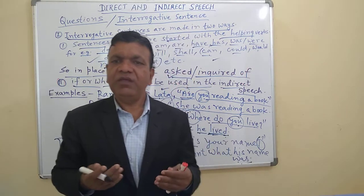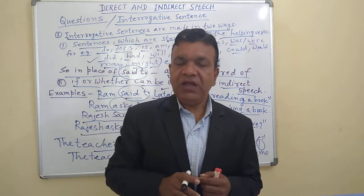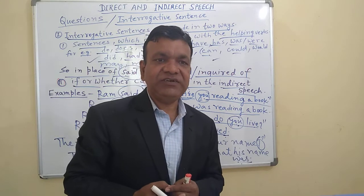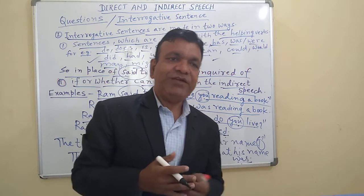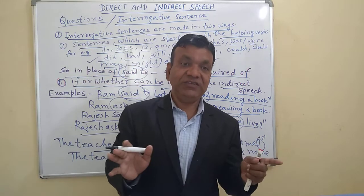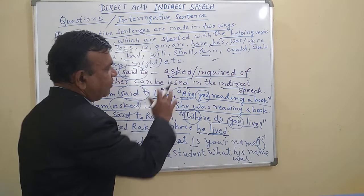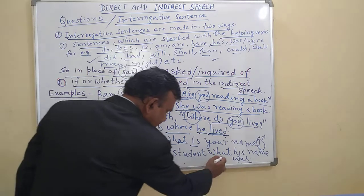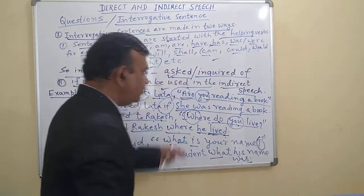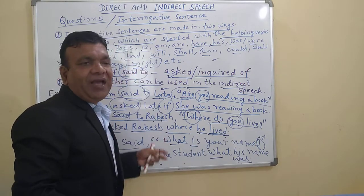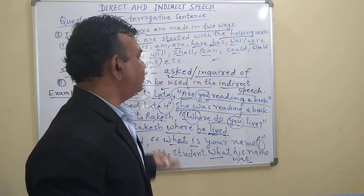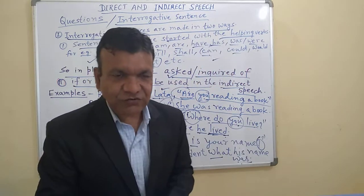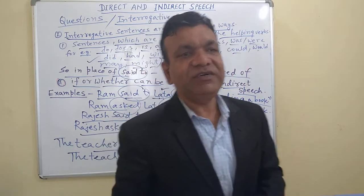So like this we are changing the interrogative sentence. I'll send you some questions for revision and practice. My dear children, we have to do practice of this interrogative sentence. Next, I will explain you the imperative sentence and how to change imperative sentences. Remember: whenever a WH family question is asked, you do not put 'if' or 'whether' — simply use the WH word as it is. Thank you so much, my children. I hope you have understood. I'll explain the imperative sentence next. Thank you.